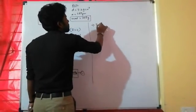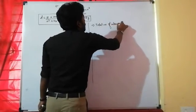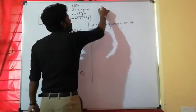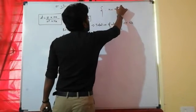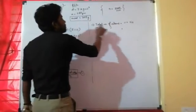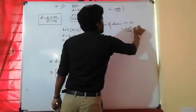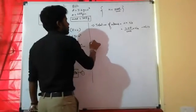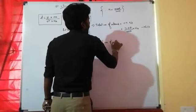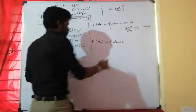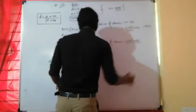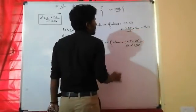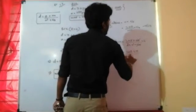From the mole concept chapter, total number of atoms equals small n into Nₐ, where small n is the number of moles. Number of moles equals given mass in grams divided by molar mass, which is 208 divided by m₀. This is equation 2. Substituting equation 1 into equation 2, total number of atoms equals 208 into Nₐ divided by D into a-cube into Nₐ divided by z. Nₐ cancels out, giving total atoms equals 208 into z divided by D into a-cube.